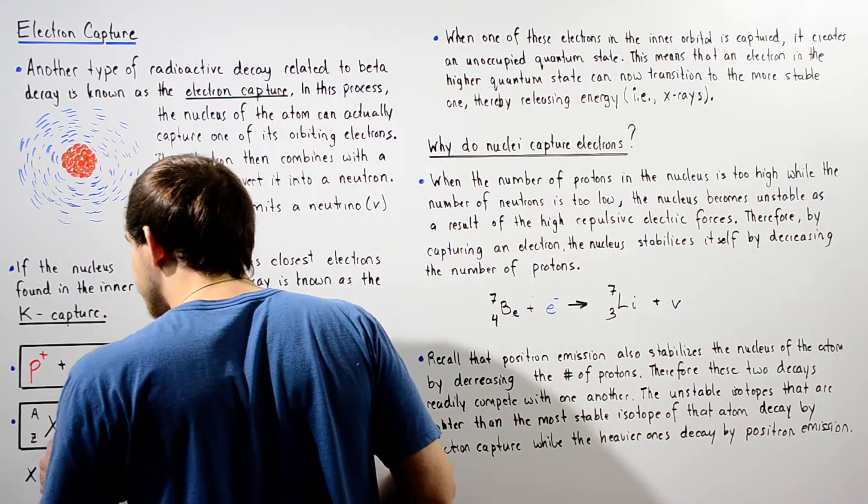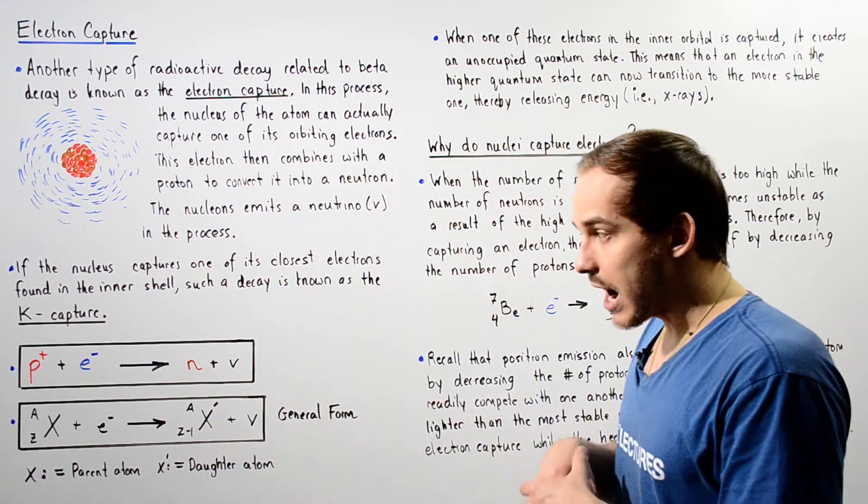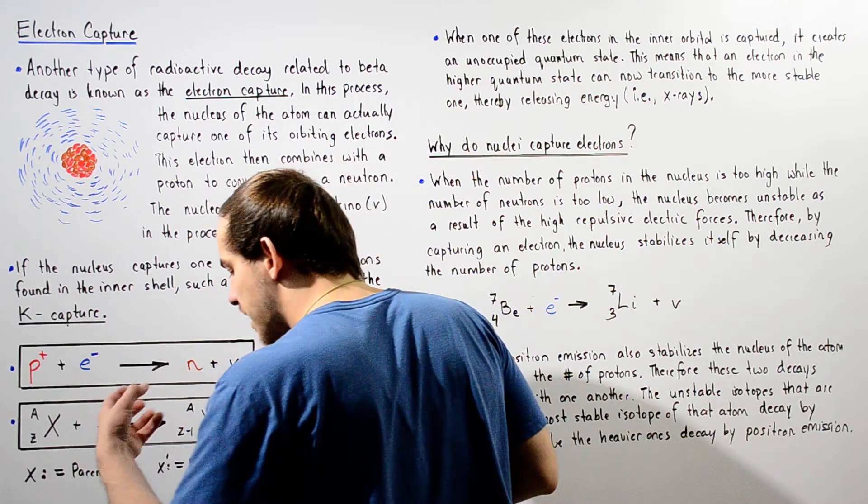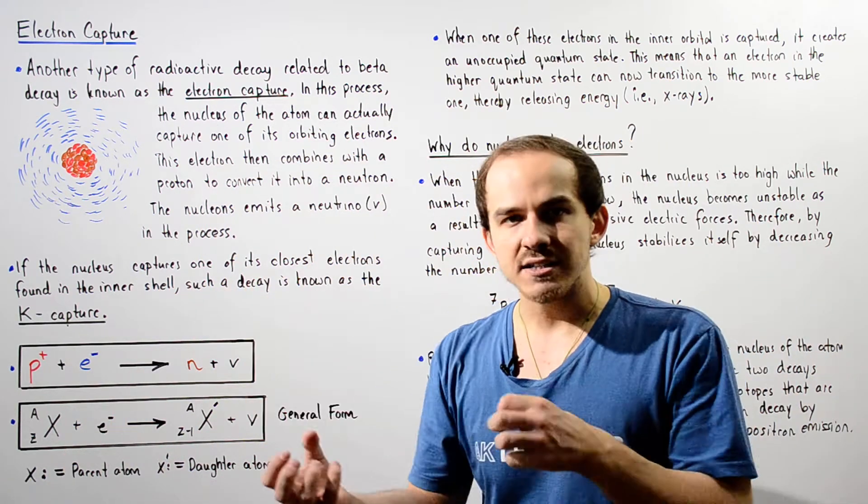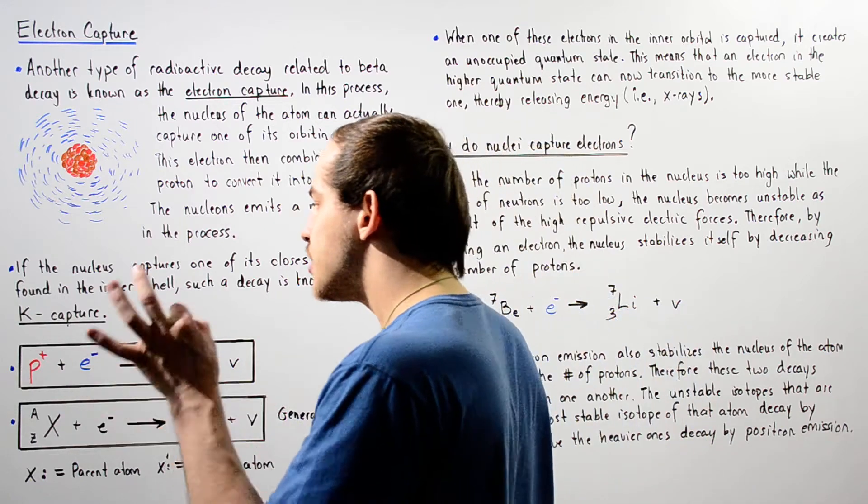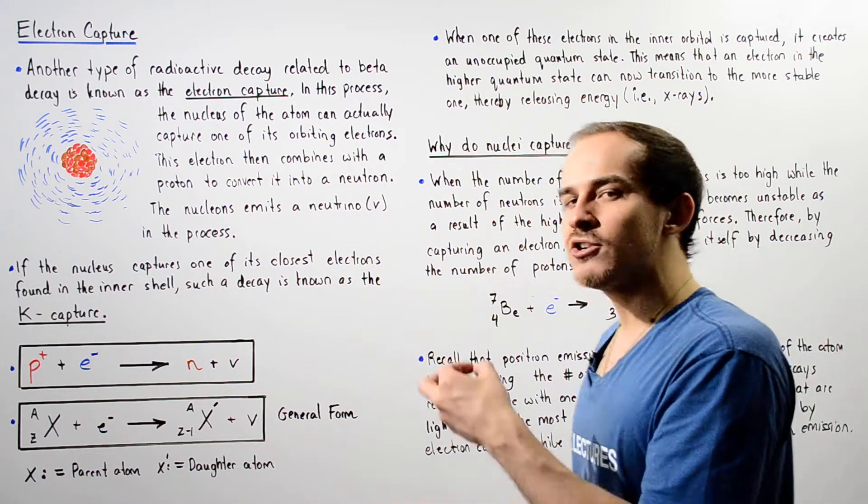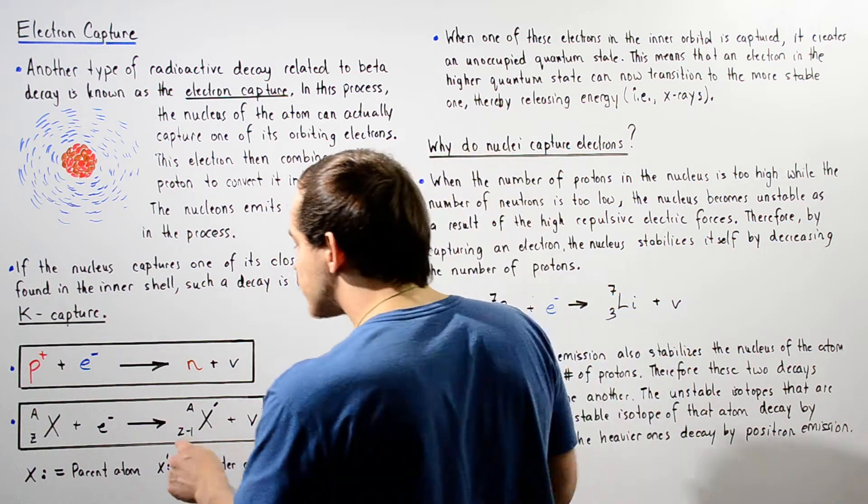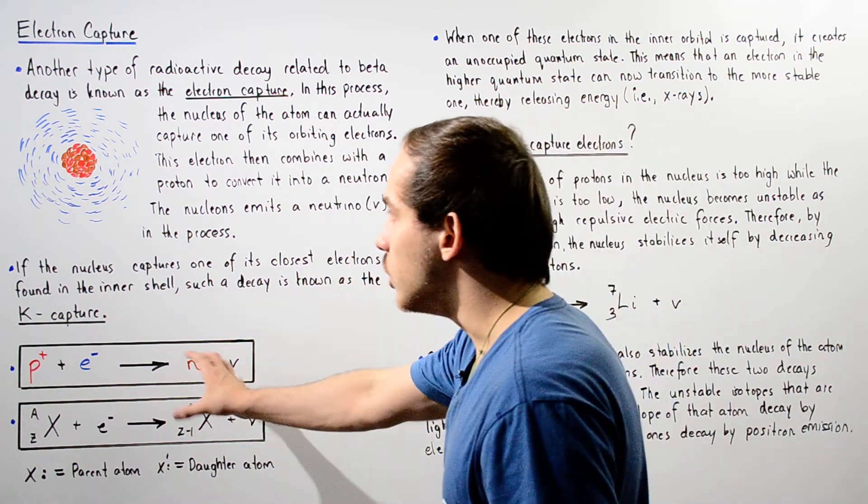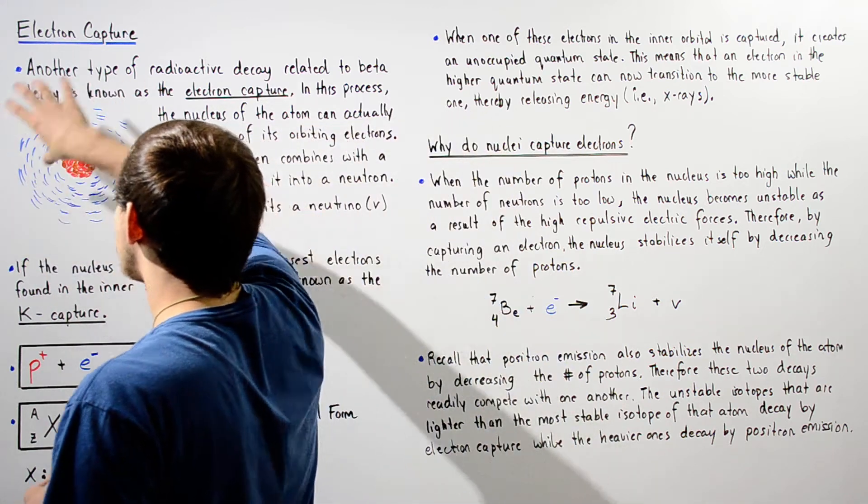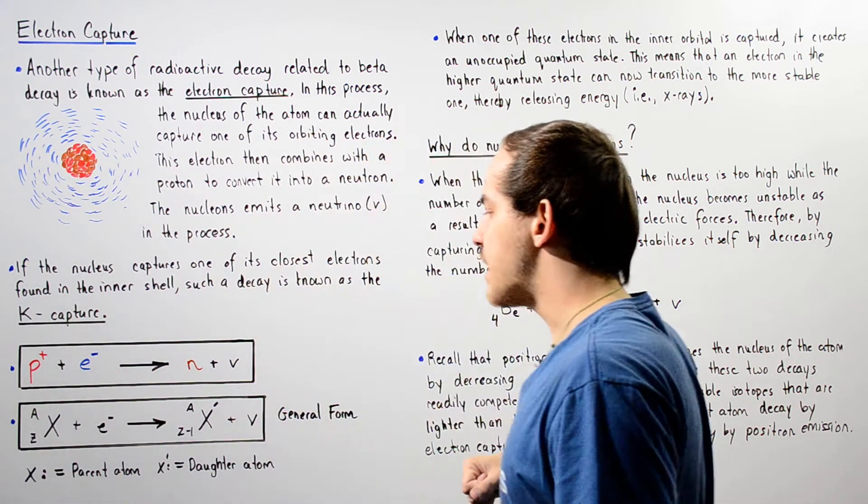Now basically what happens is the nucleus in our X in this atom basically takes that electron inside. So it combines the proton-electron and the number of protons and electrons decreases by one. And that's why the Z, the atomic number, decreases by one along with the number of electrons found orbiting that nucleus.